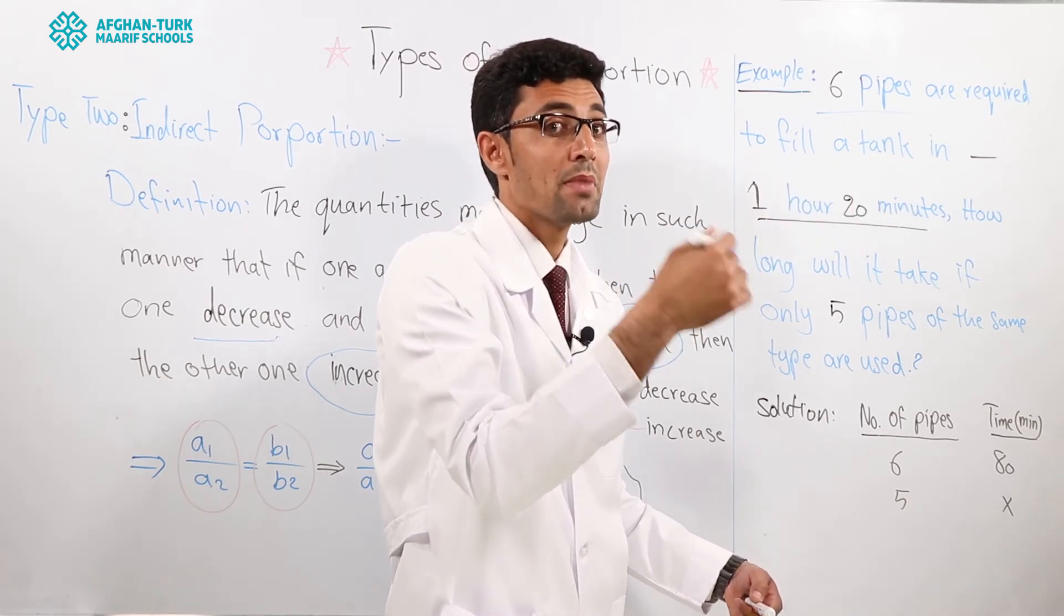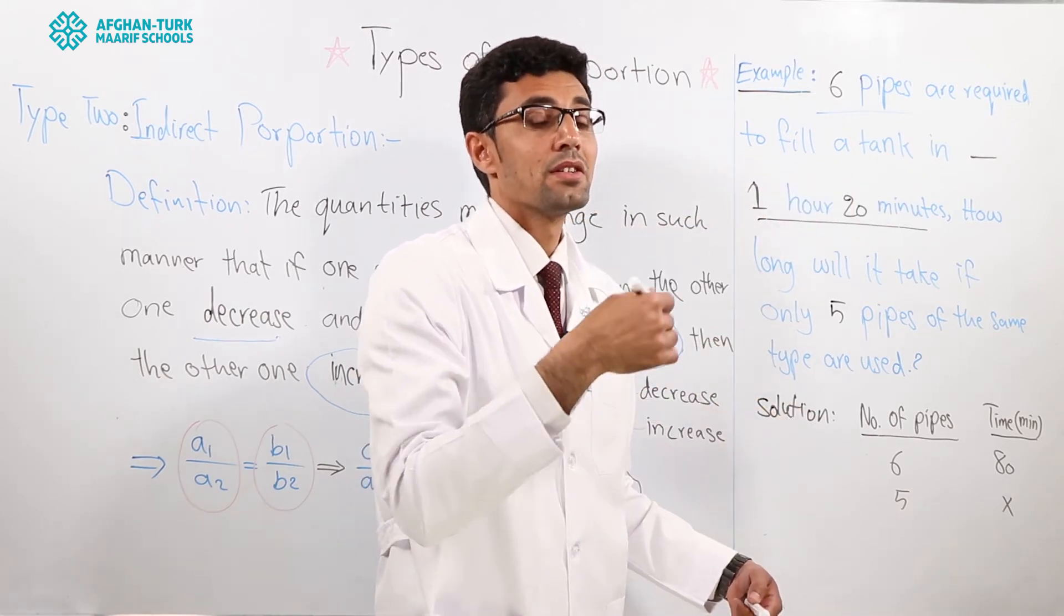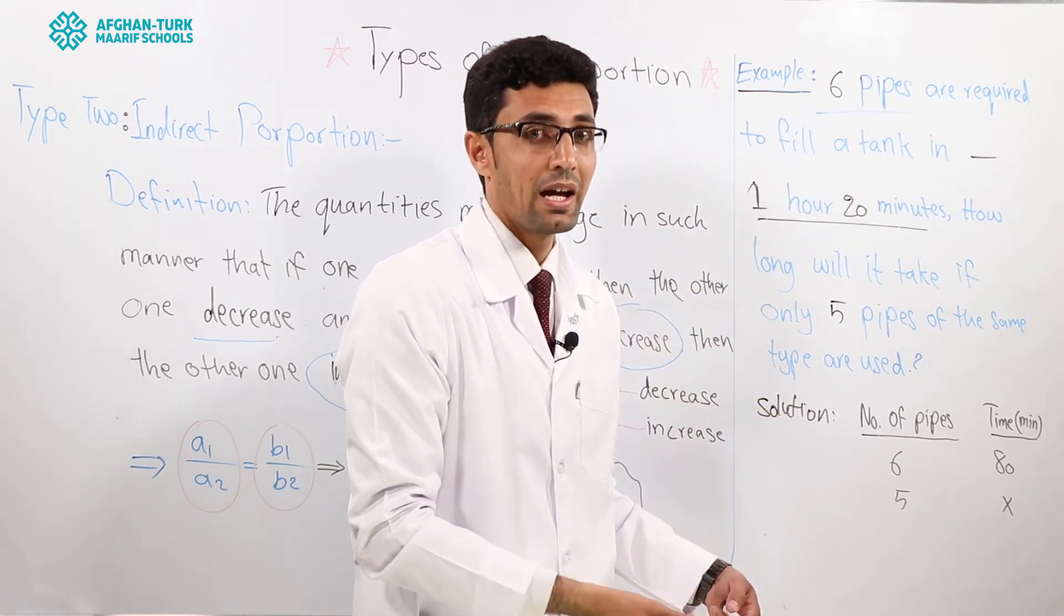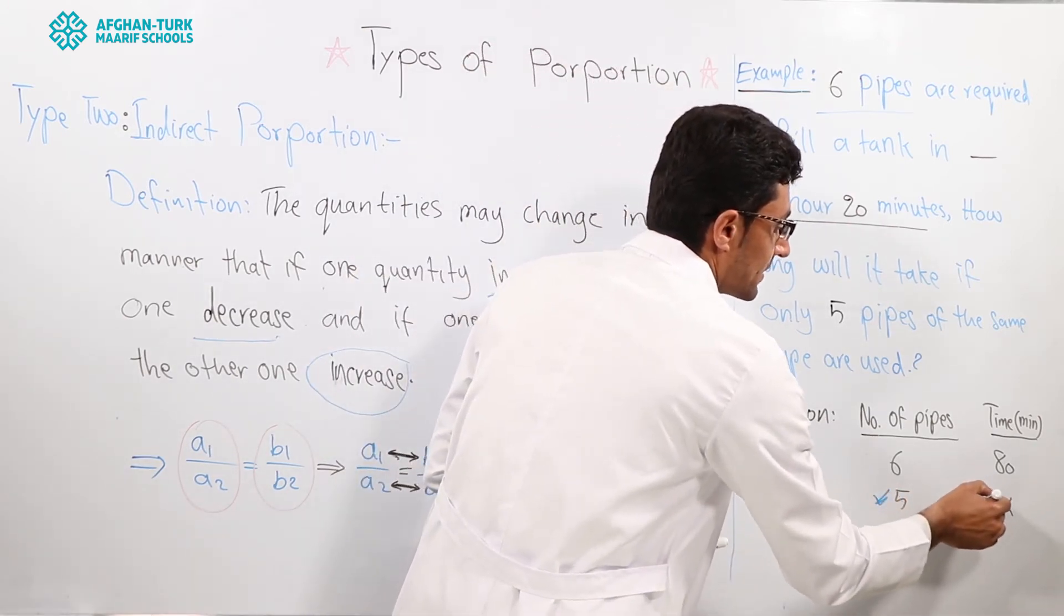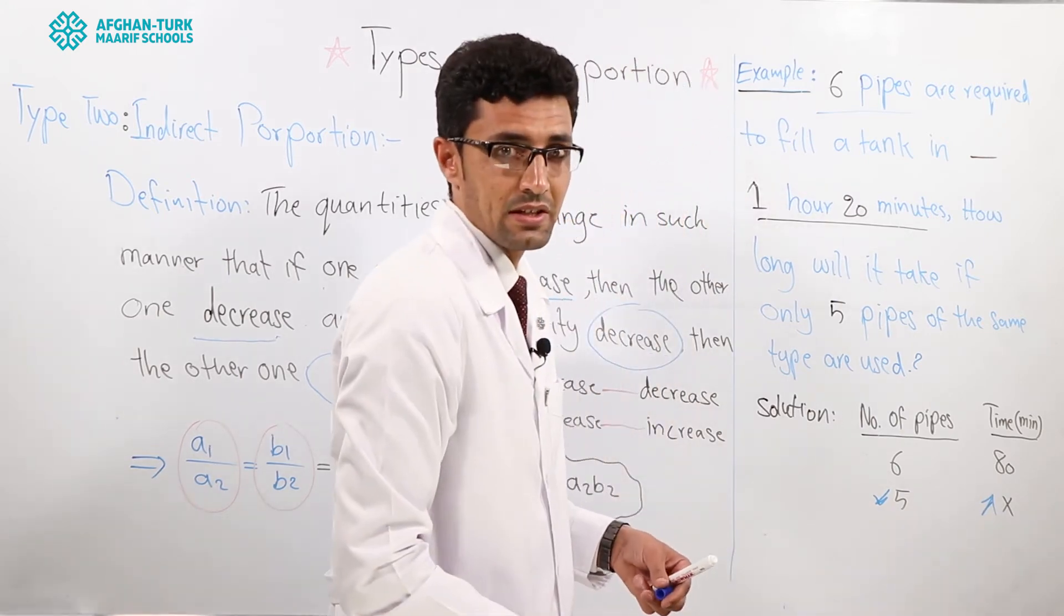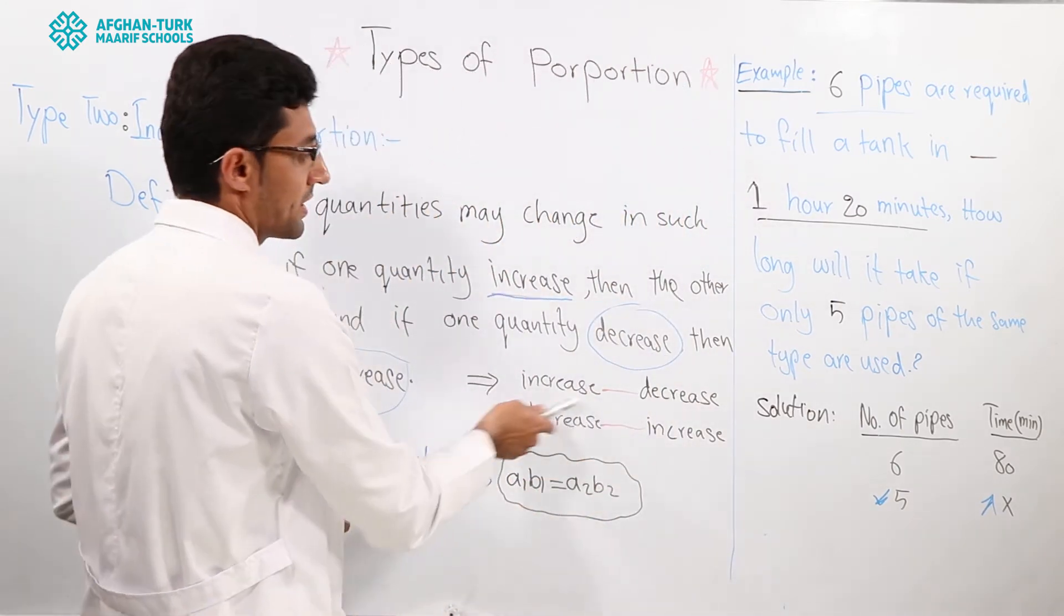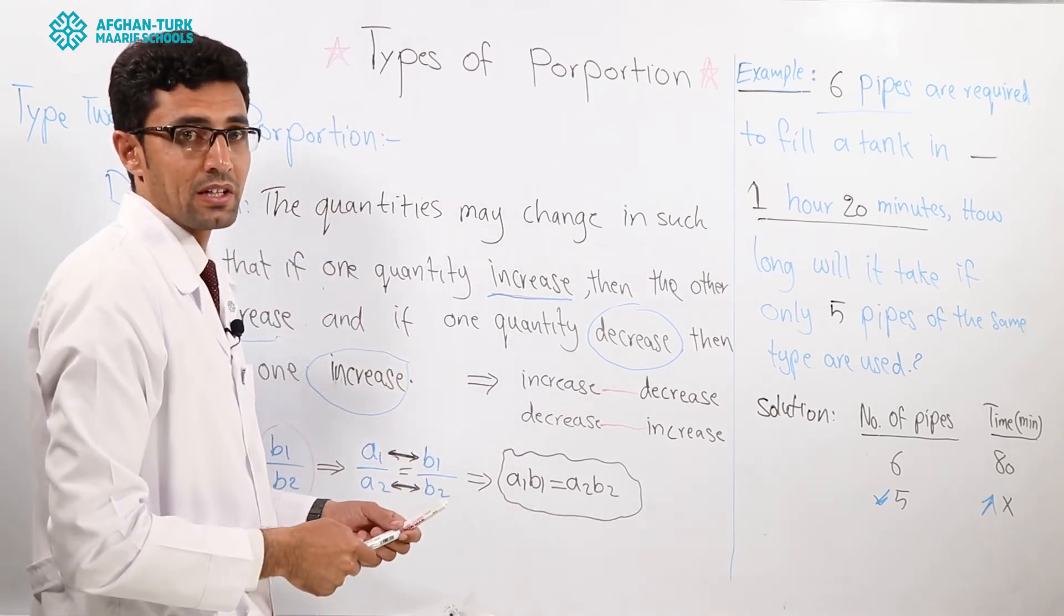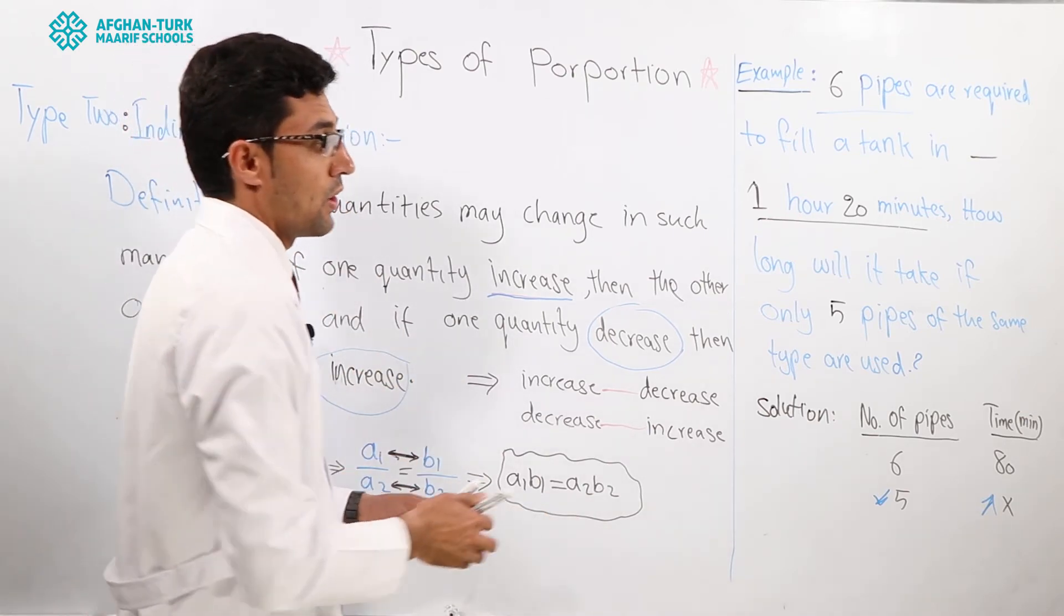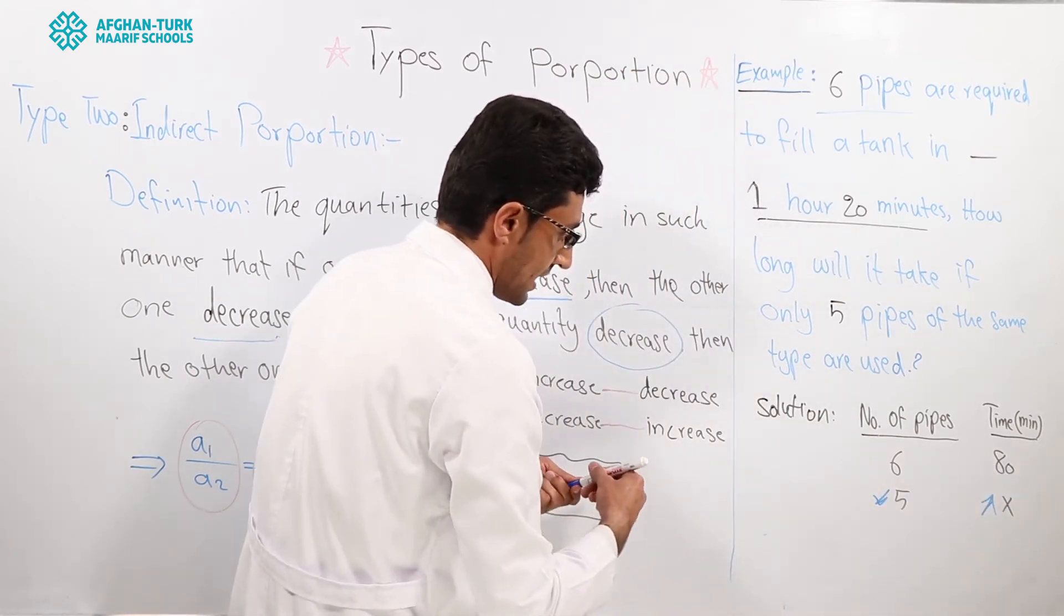You must spend much more time. It means that this is increased and this will decrease. So increase-decrease or decrease-increase is what type of proportion? It is indirect. I can write it as a proportion.